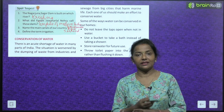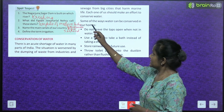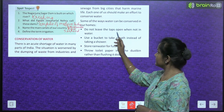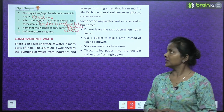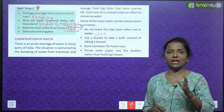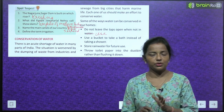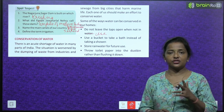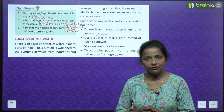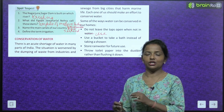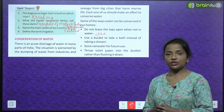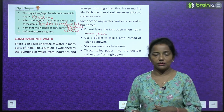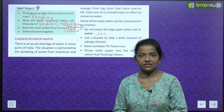Some ways water can be conserved at home: Do not leave the taps open when not in use. Use a bucket to take a bath instead of taking a shower, as showers waste a lot of water. Store rain water for future use. Throw toilet paper into the dustbin rather than flushing it down.